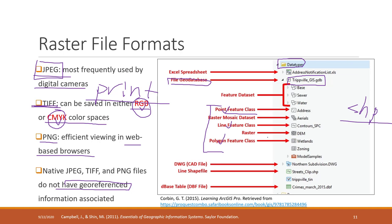You can also have raster data like DEMs and air photos inside the geodatabase. Within the file geodatabase, you can also have datasets, which act like folders or subfolders to organize multiple feature classes. You can also have other vector data like DWG files developed by AutoDesk, as well as individual shapefiles outside the geodatabase. Data inside the geodatabase is called a feature class; data outside is normally saved as a shapefile.